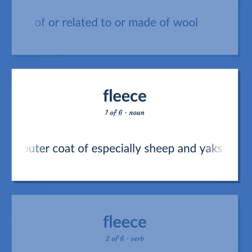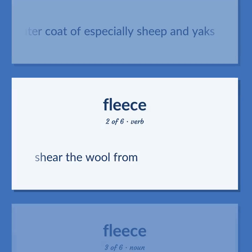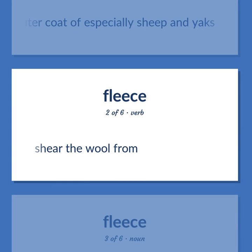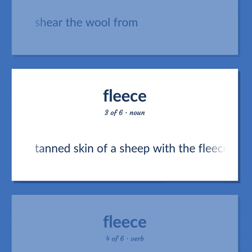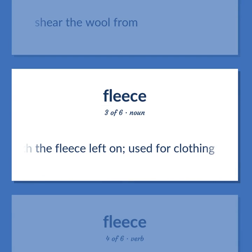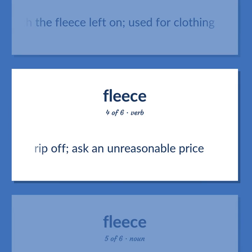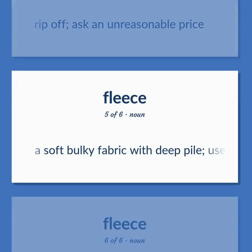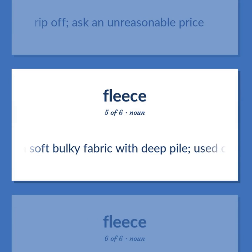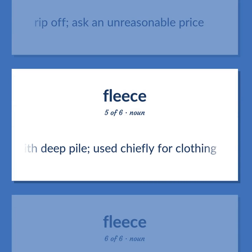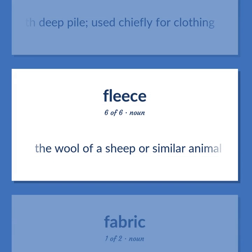Fleece: Outer coat of especially sheep and yaks. Shear the wool from. Tanned skin of a sheep with the fleece left on, used for clothing. Also: to rip off, or ask an unreasonable price. A soft bulky fabric with deep pile, used chiefly for clothing.